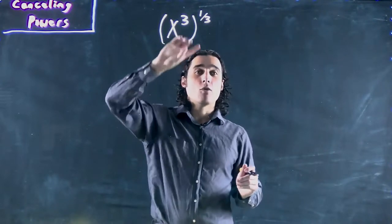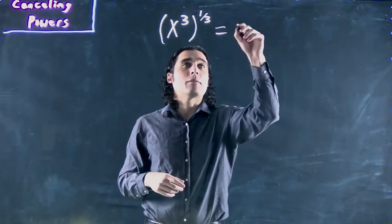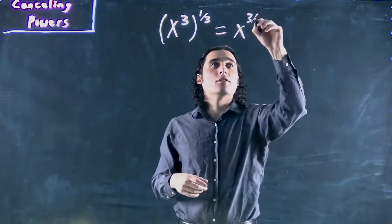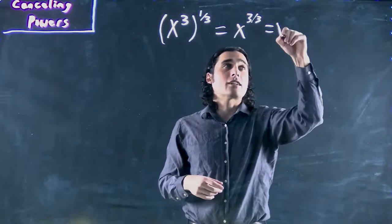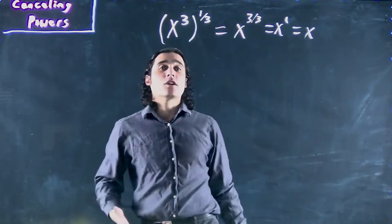We have power of 3, 1 over 3 is the inverse. Great. This would just be the same as x to the 3 over 3 equals x to the 1, which is just x. And as long as we do that to the other side, we've now solved our equation.